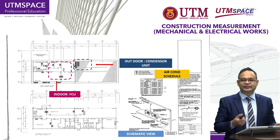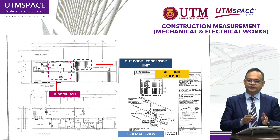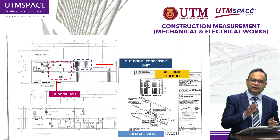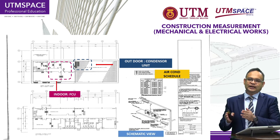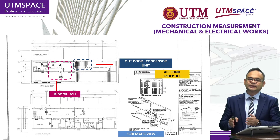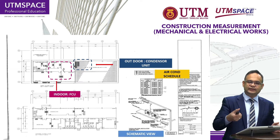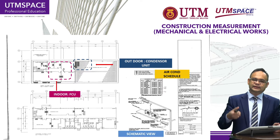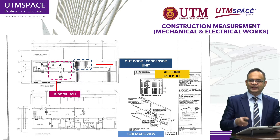Engineers also show us the schematic for how to connect from what we call the FCU — fan cooling unit — to the outdoor unit, which is the condenser unit. We use a piping system with copper pipe to transfer the cool gas from the condenser unit to the fan cooling unit, as shown in the drawing.